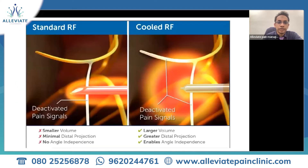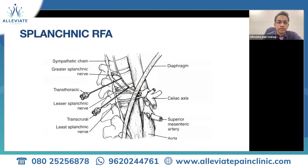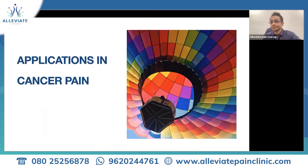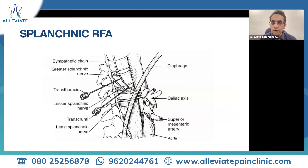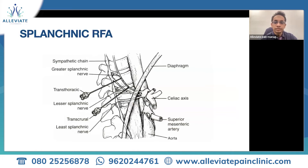Coming to cancer pain per se, what we need to understand is whenever there is cancer pain, we have to understand where the cancer pain is coming from. Depending on what kind of cancer it is, different kinds of treatments are there. For example, if someone is suffering from a cancer of the upper part of the abdomen, like stomach, pancreas, etc., what we do is we target certain nerves which carry painful signals from the stomach and the upper abdominal area. One of such nerves is called the splanchnic plexus.